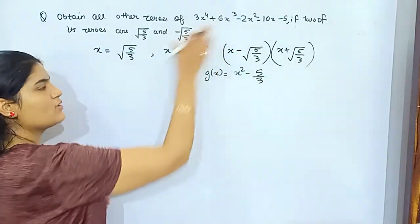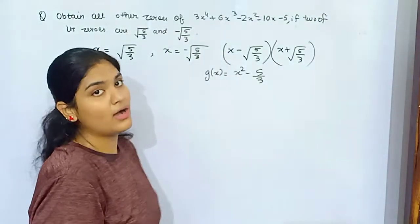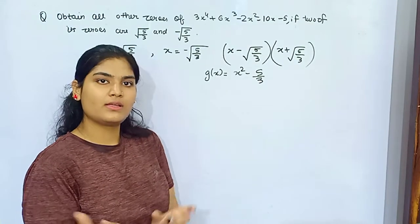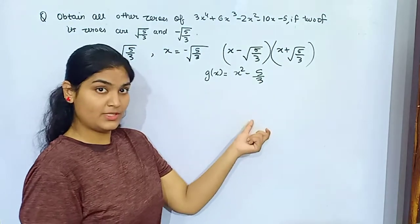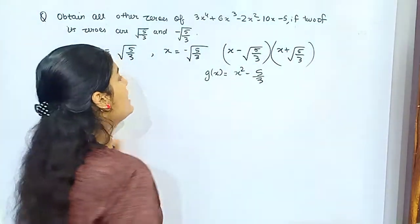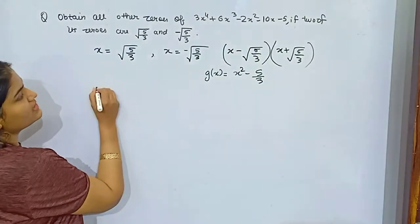This was the critical part which you need to understand. I hope you got it. Let's extend it. So x² - 5/3, and this is your dividend: 3x⁴ + 6x³ - 2x² - 10x - 5.